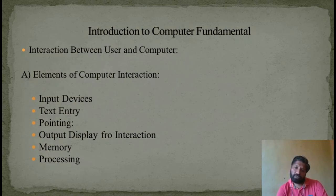Now, the interaction. What is the interaction between user and computer? There are the elements of computer interaction. First is Input Devices, the devices which you have already seen in the earlier slide. All the devices, that mouse, keyboard we use to do the input to the computer. Next, text entry. For that we use a keyboard to do the input. Pointing, yes, mouse. Mouse we use for pointers. Display, that is a monitor. And memory, that is storage, and the processing which runs inside.